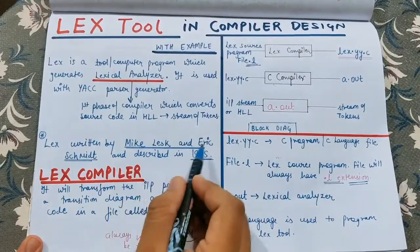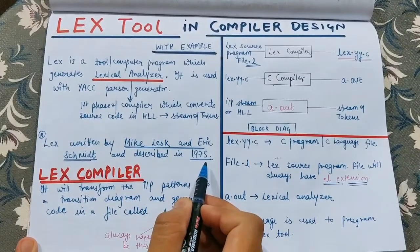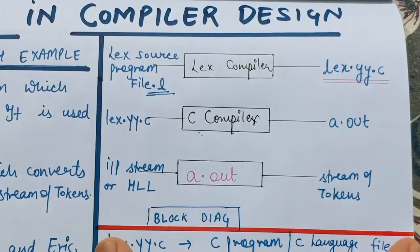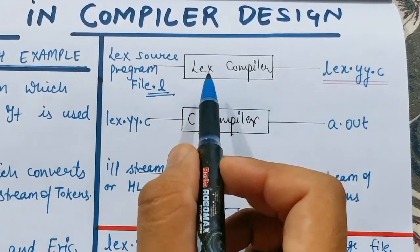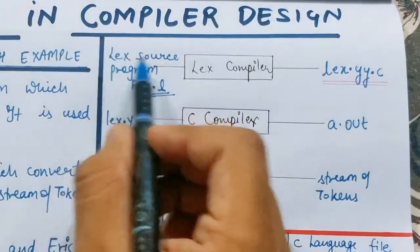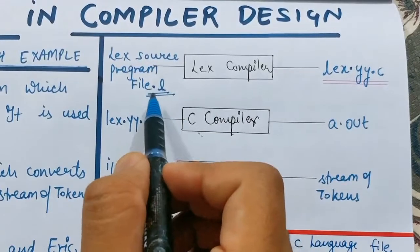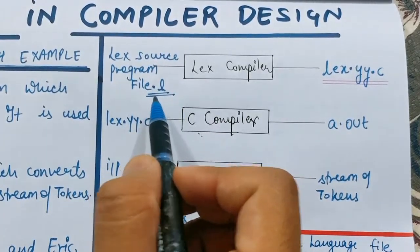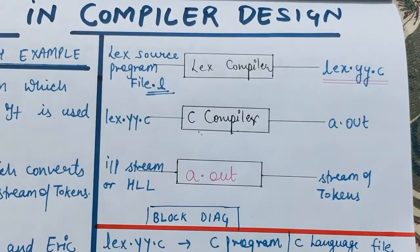Lex was written by Mike Lesk and Eric Schmidt, and was described in 1975. Now let's see the main diagram. When we talk of the working of the Lex tool, we have three sections. First, the Lex compiler — which is the Lex tool itself — receives an input file called the Lex source program file. This file has the dot-l extension. If the name of your file is 'file', it will be 'file.l'. This extension is a must.